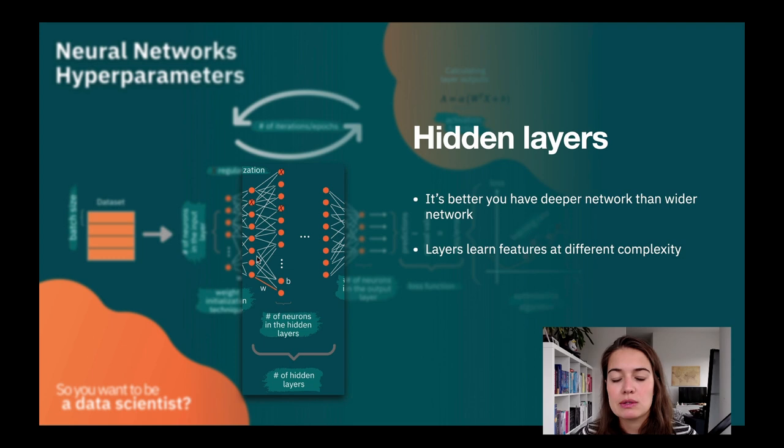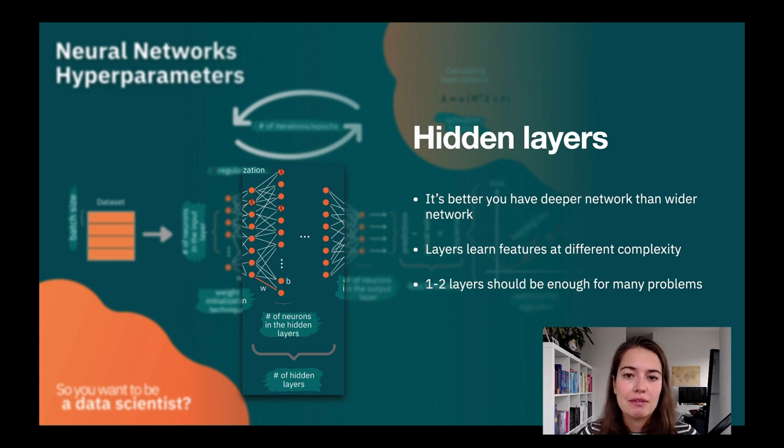The more layers you have, the more different layers of complexity you can handle. That's why it's better to have more layers than more neurons in one layer. Normally you can start with one or two layers. Many problems will be okay with one or two layers, but start with two and work your way up.